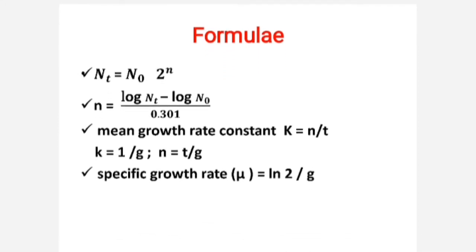Here is a summary of the key formulas. First: nₜ = n₀ × 2ⁿ, where nₜ is population after time t, n₀ is initial population, and n is number of generations. Number of generations: n = (log nₜ − log n₀) / 0.301. Mean growth rate constant: k = n / t, and also k = 1 / g, so n = t / g. Additionally, specific growth rate μ = ln 2 / g. This is also important for numerical problems.